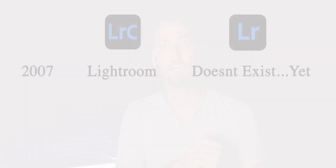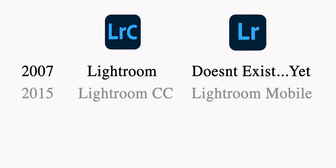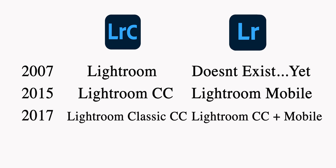In 2007, Adobe came out with Lightroom Classic, which was called simply Lightroom — Adobe's program to edit photos, aside from Photoshop. In 2015, they renamed it to Lightroom CC, which is still technically Lightroom Classic, but they also came out with Lightroom Mobile so you could sync your photos. Then in 2017, they renamed Lightroom CC to Lightroom Classic CC and came out with a new Lightroom CC, so now you had two different Lightrooms with switched names.